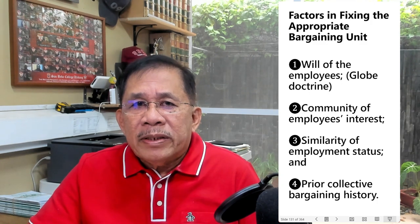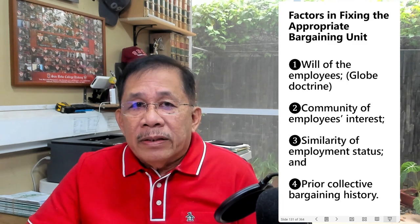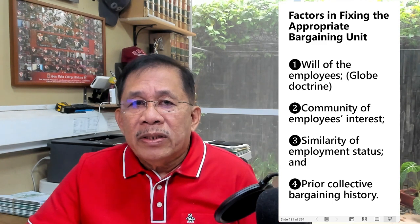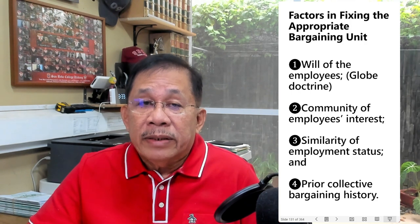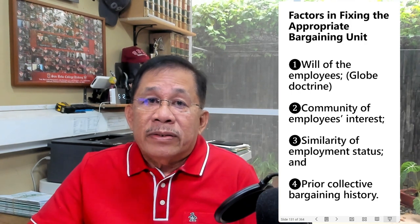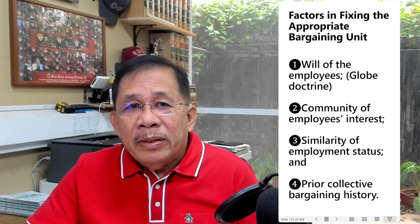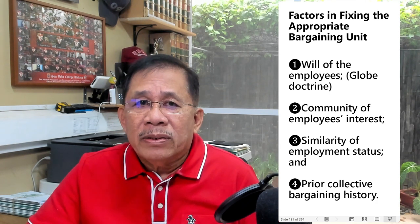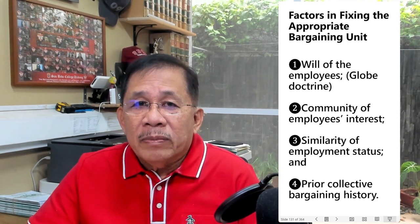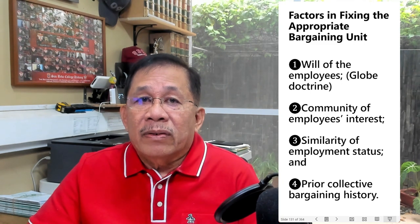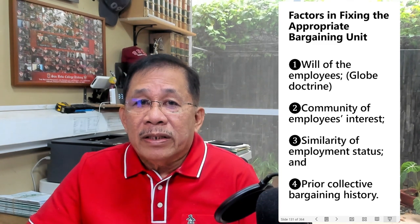Under the similarity of employment status, the main consideration in fixing the appropriate bargaining unit is the status of employment. The rule requires that non-regular employees be grouped as one category and regular employees be grouped as another category. As for prior bargaining history, this is not a decisive factor, because prior bargaining history may be disregarded when the circumstances had been so altered that the past mutual experience can no longer be considered a reliable guide to the present determination of the bargaining unit. Only the prevailing factor should control the determination.